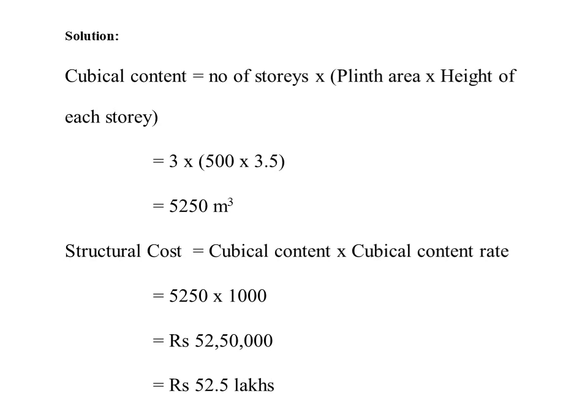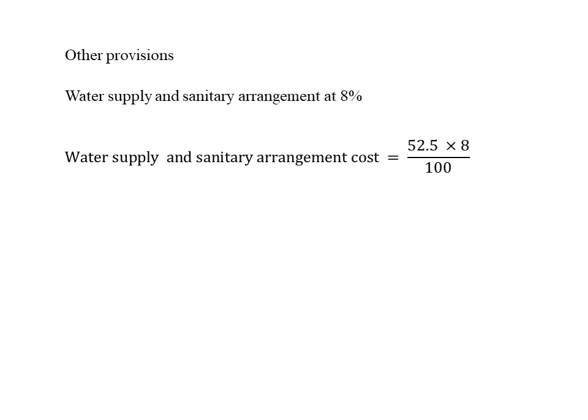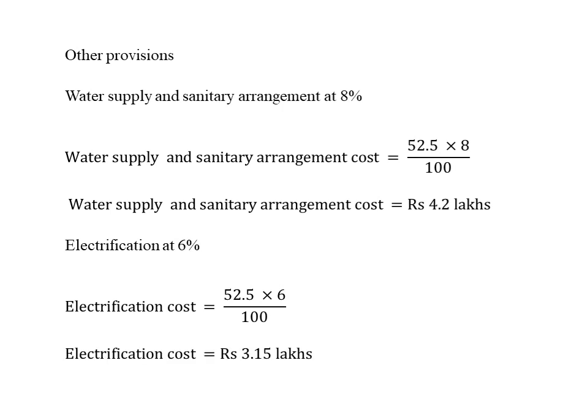Now calculate additional costs based on structural cost. Water supply and sanitary arrangement at 8% of structural cost: cost equals 52.5 into 8 divided by 100, which equals 4.2 lakhs. Electrification at 6%: electrification cost is equal to 52.5 into 6 divided by 100, which equals 3.15 lakhs.